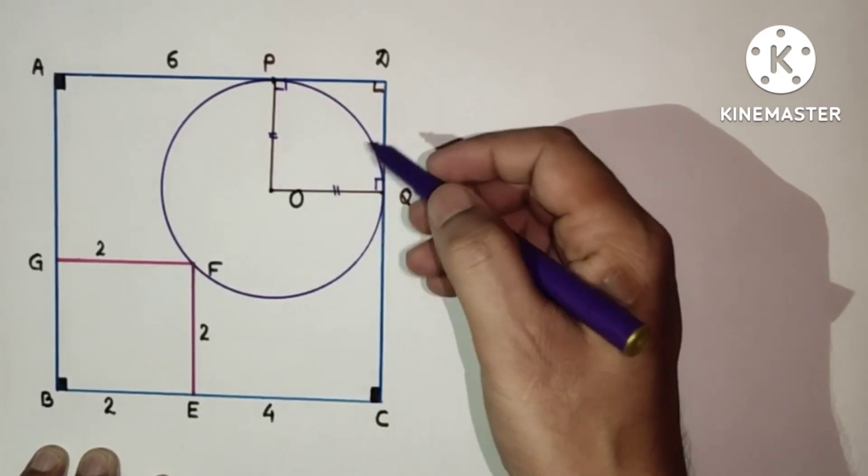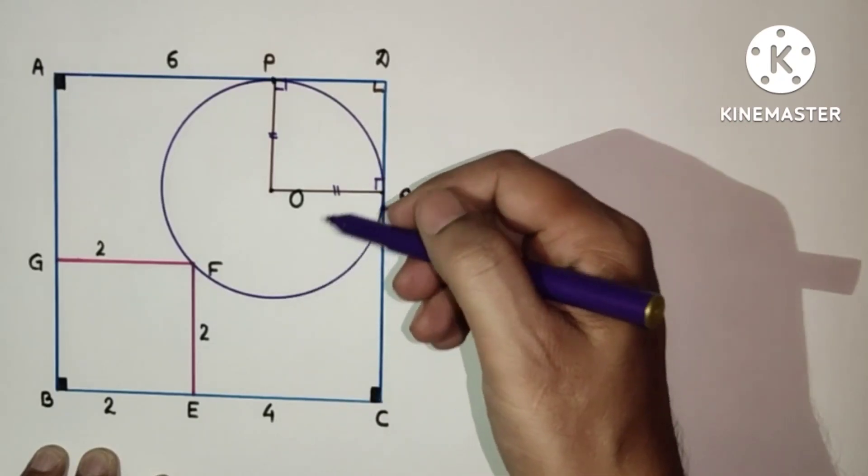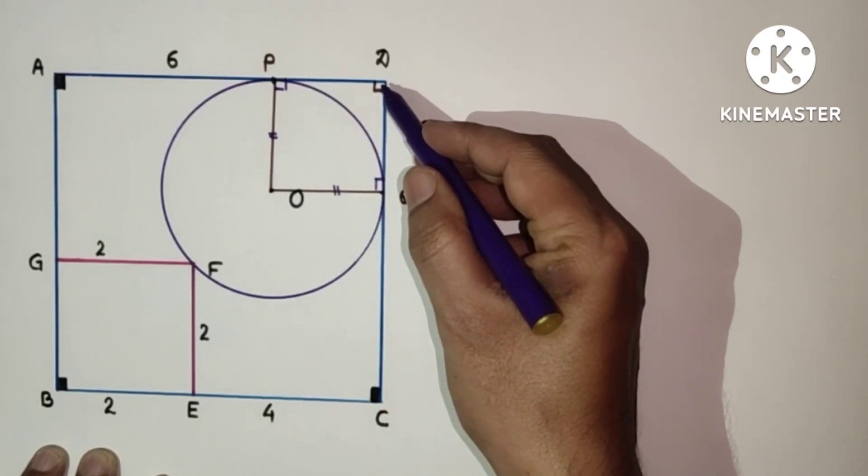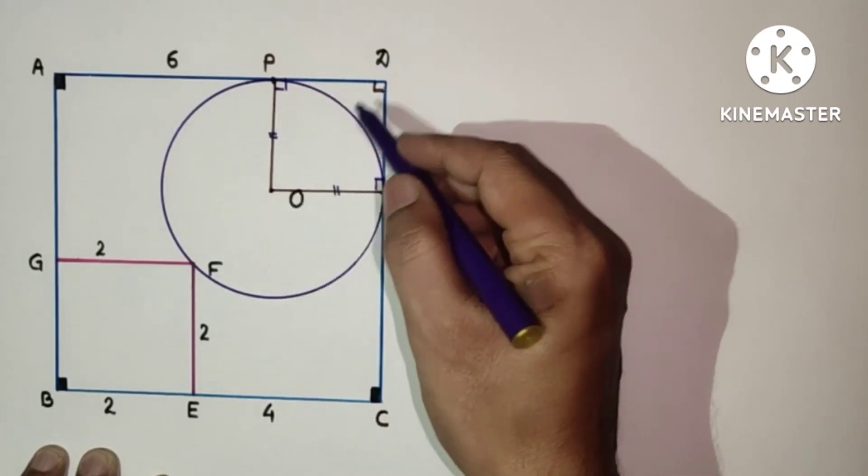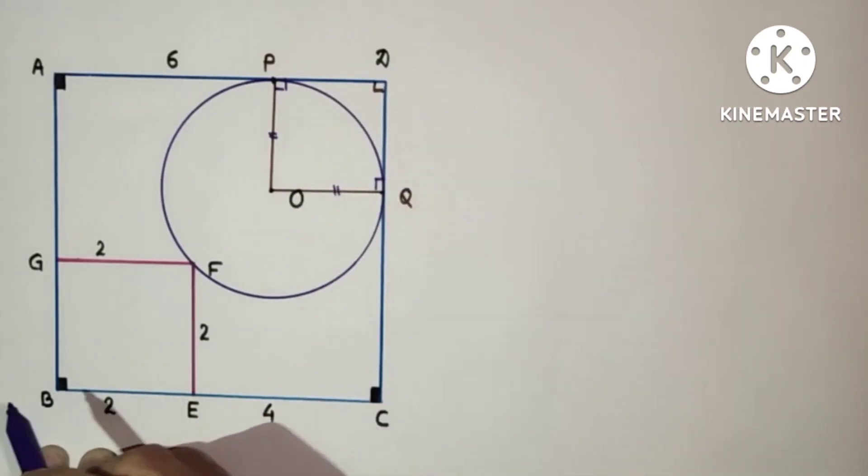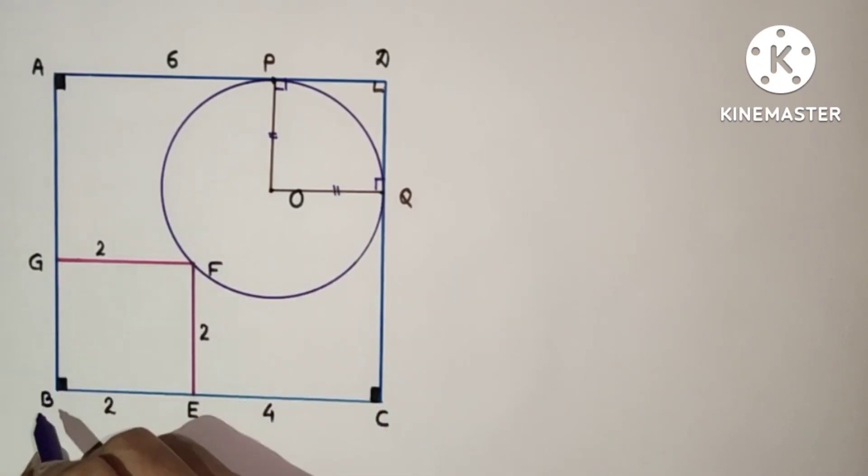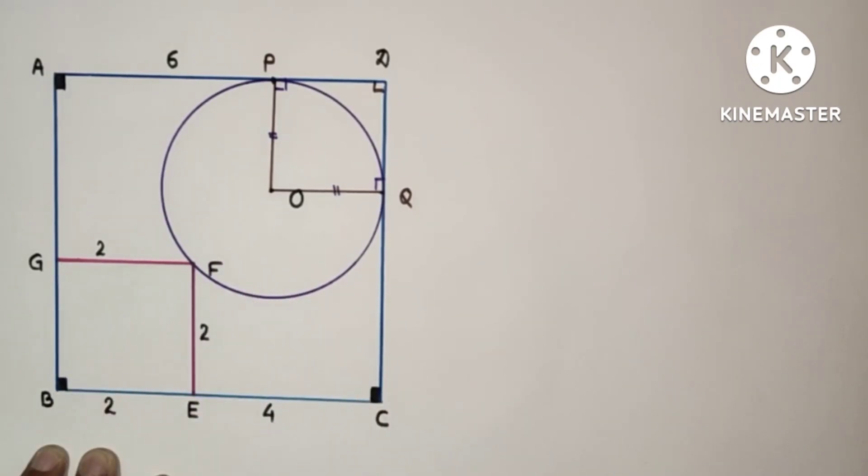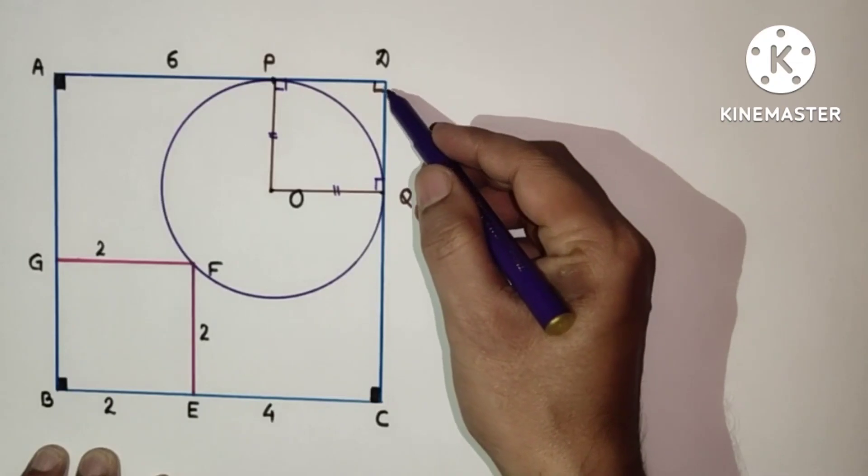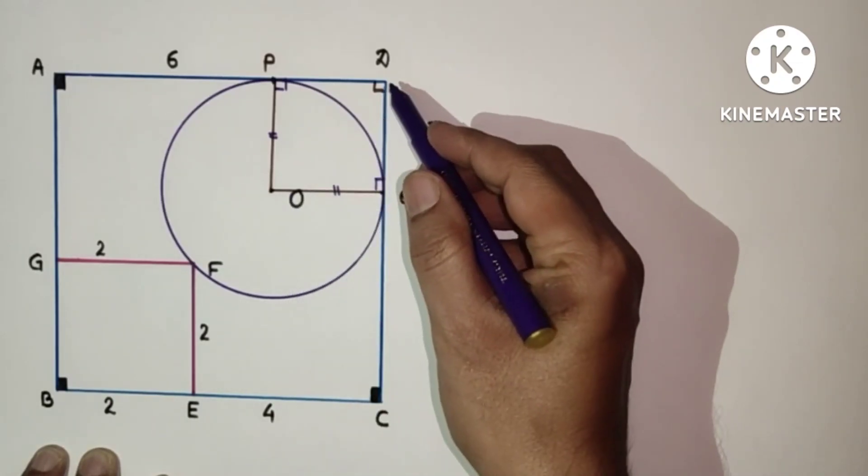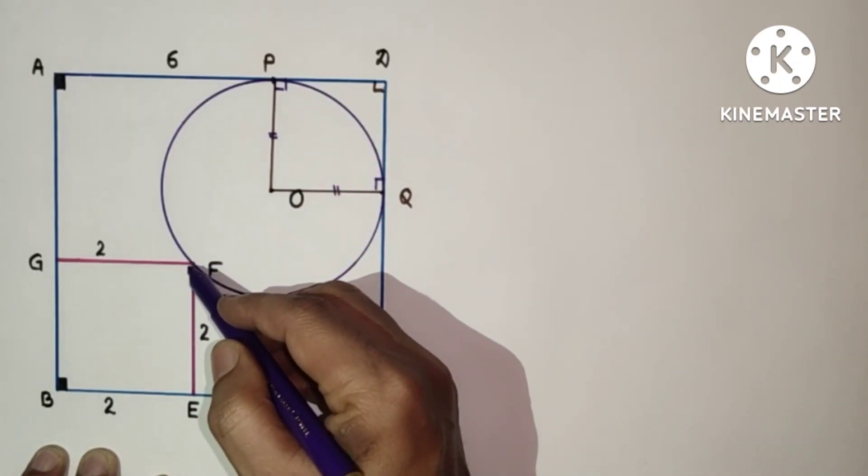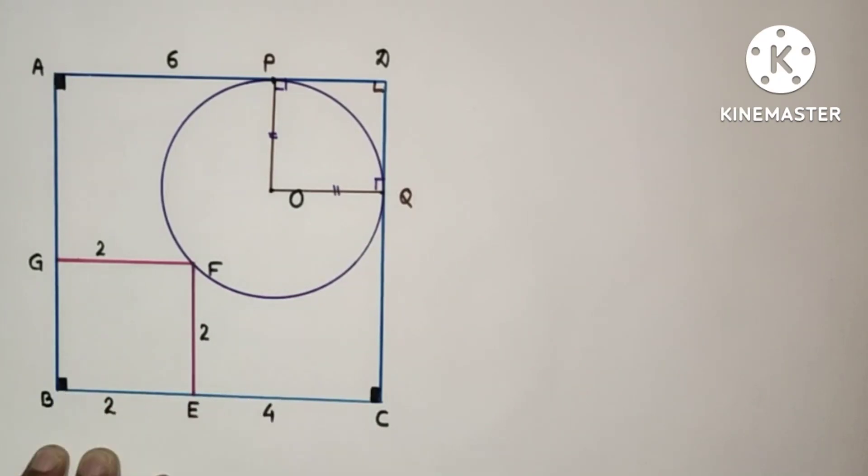In a square diagonals bisect the angle. If we join DO, DO will bisect this angle. Means angle PDO will be 45 degrees. And here also if we join BF, angle GBF will be 45. So if we extend this DO, this will pass through F and goes to point B.